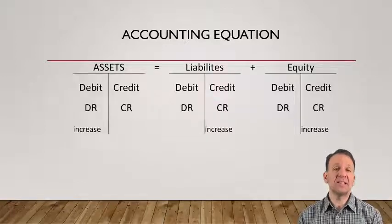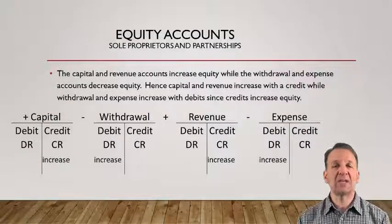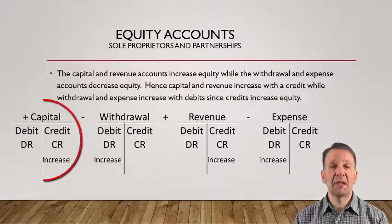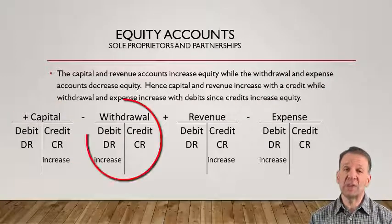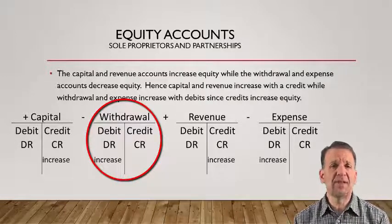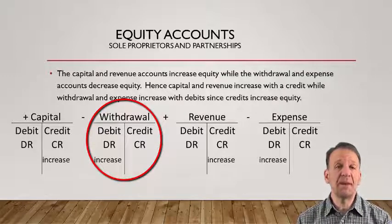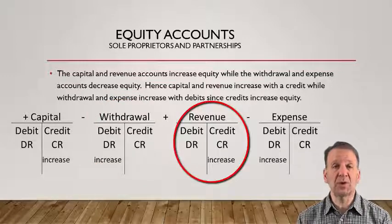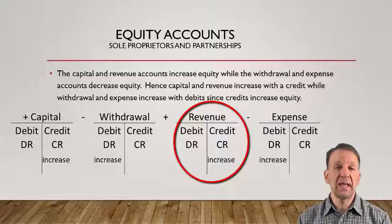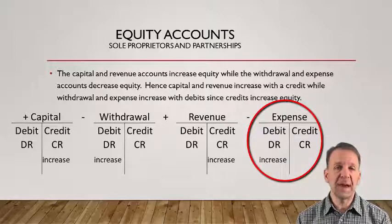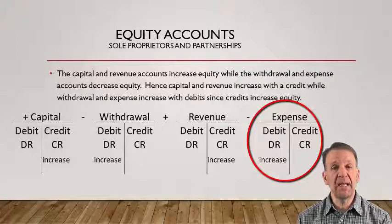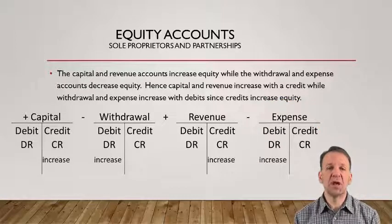Equity will decrease with a debit. Let's take a look at the equity accounts in a sole proprietorship or a partnership. The capital account increases with a credit — this makes perfect sense since equity increases with a credit. Withdrawals, on the other hand, increase with a debit. Withdrawals will decrease the equity of the business, so this debit that increases the withdrawal decreases overall equity. Revenue increases with a credit, which also makes sense because revenue increases equity. The last account is the expense account, and it increases with a debit. The debit has the effect of decreasing equity, but the debit increases the expense account. These are the accounts for a sole proprietorship or a partnership.